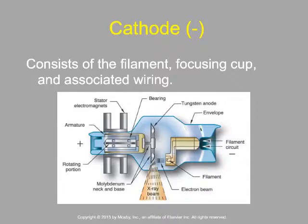That's why Bremsstrahlung doesn't happen inside the patient — Bremsstrahlung requires electrons, and we are not making electrons exit the x-ray tube. We are just making x-rays exit the x-ray tube. We are not seeing electron interactions inside the patient — that's not part of how diagnostic x-ray works.